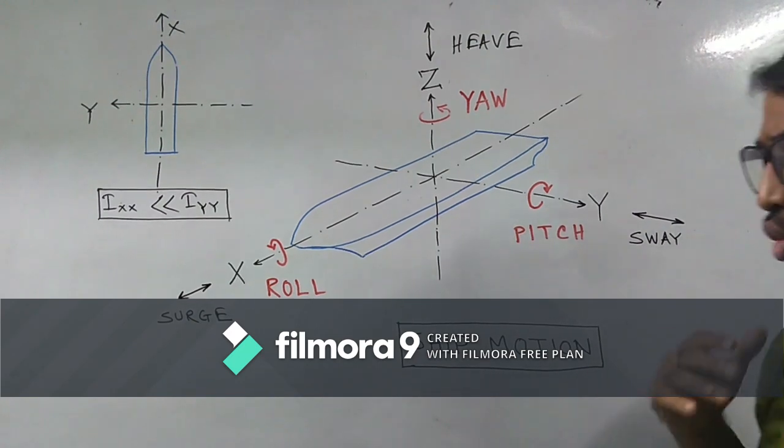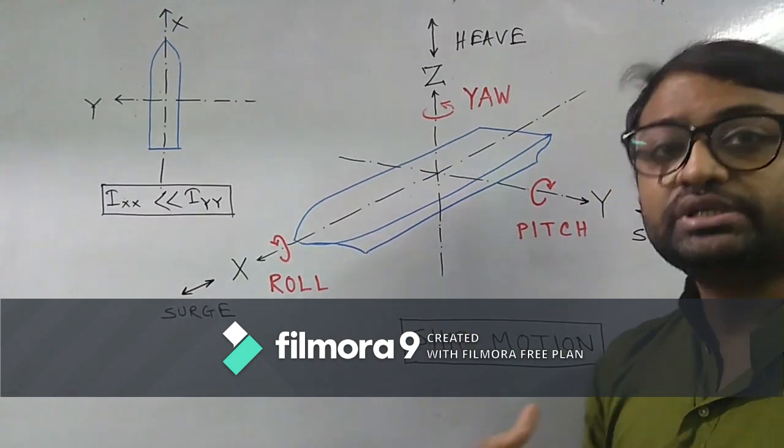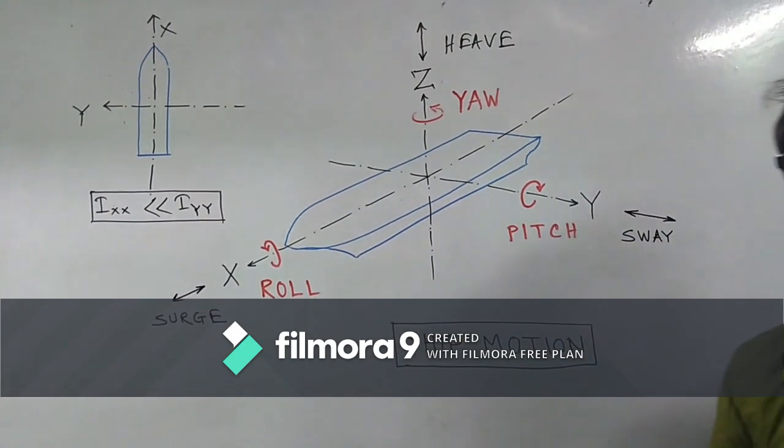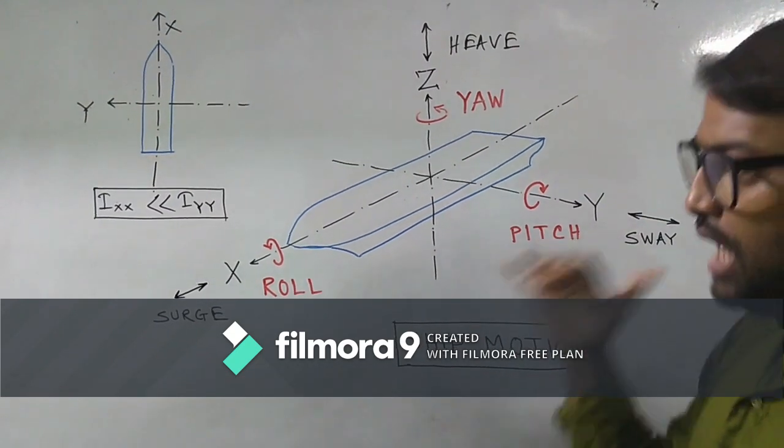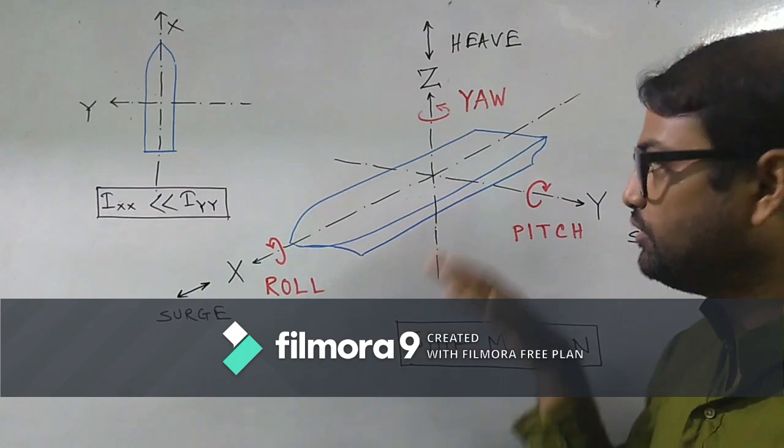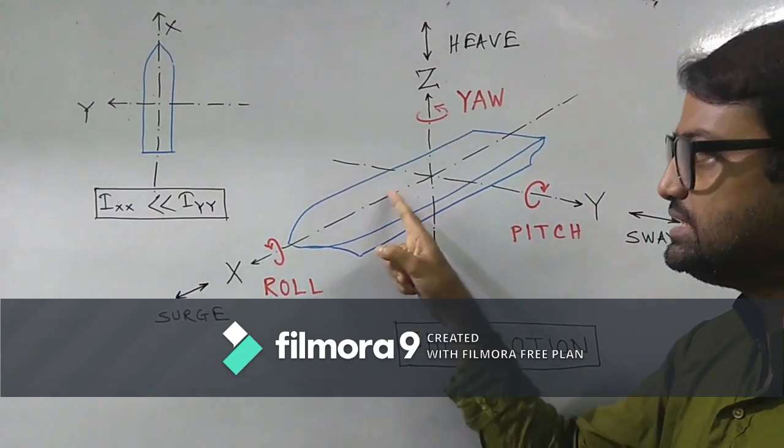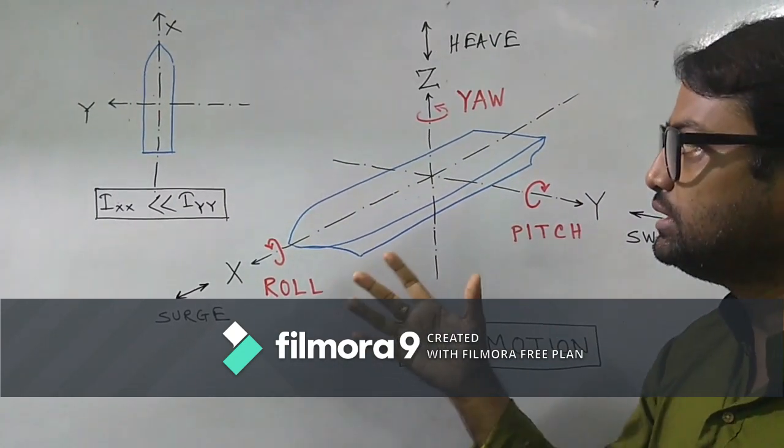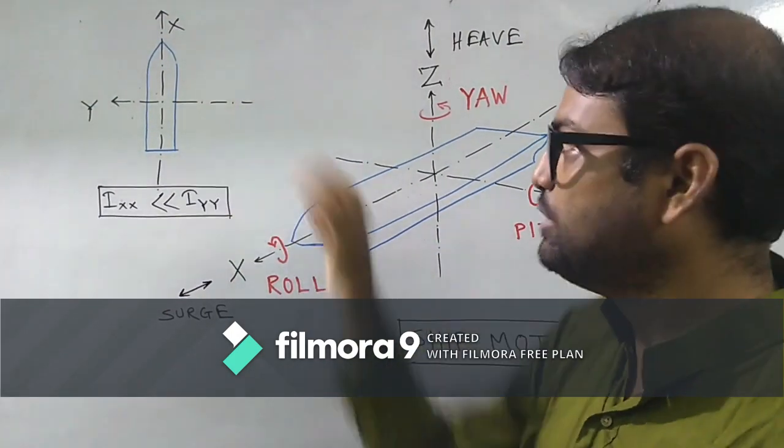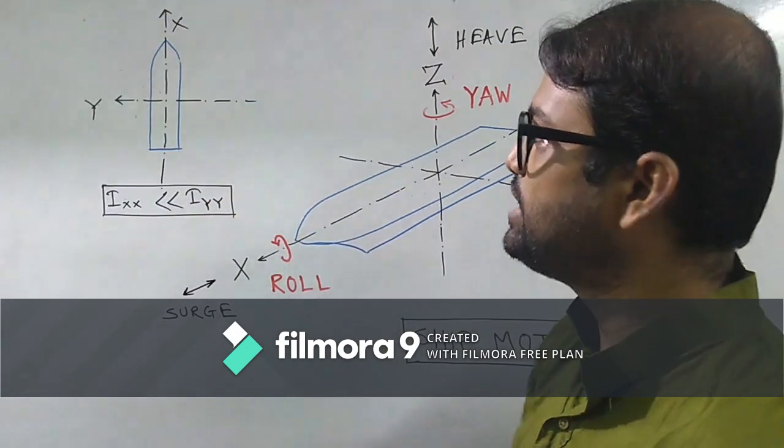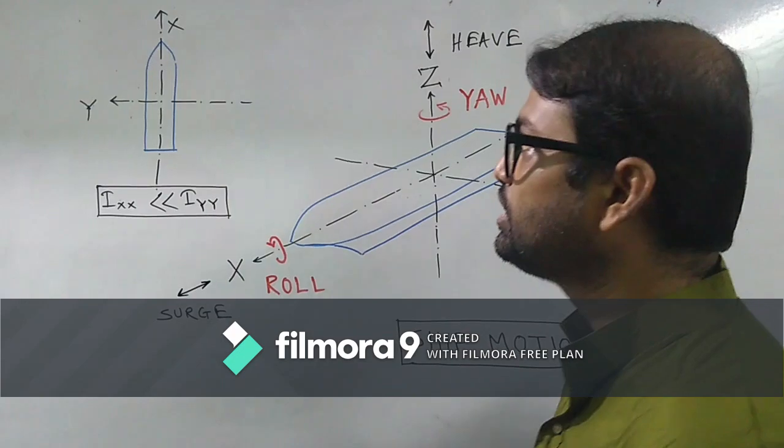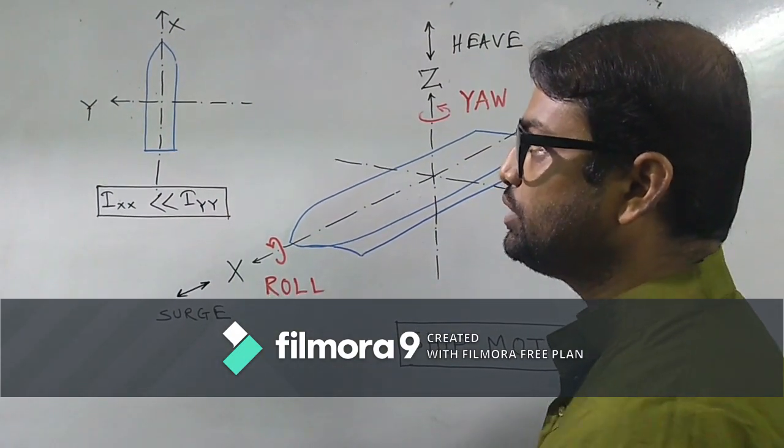So why this rolling is most dangerous? Here comes the point of stability. Now if we observe the plan view of this particular ship, this is our x-axis, this is our y-axis. I have drawn the same in plan view over here. Just have a look. This is our x-axis which is longitudinal axis. We are looking from the top, bird's eye view or the plan view, and this is our y-axis.